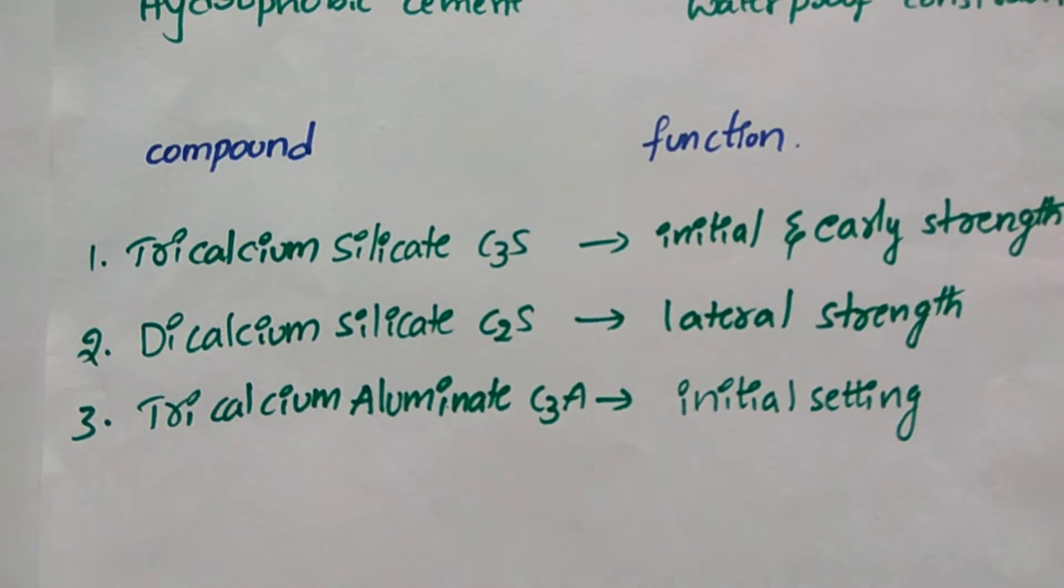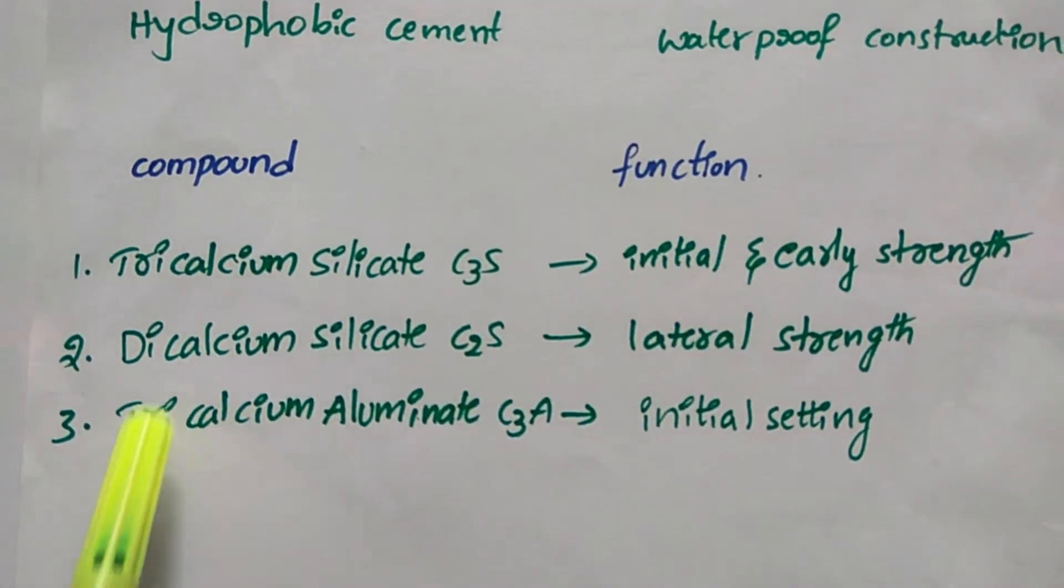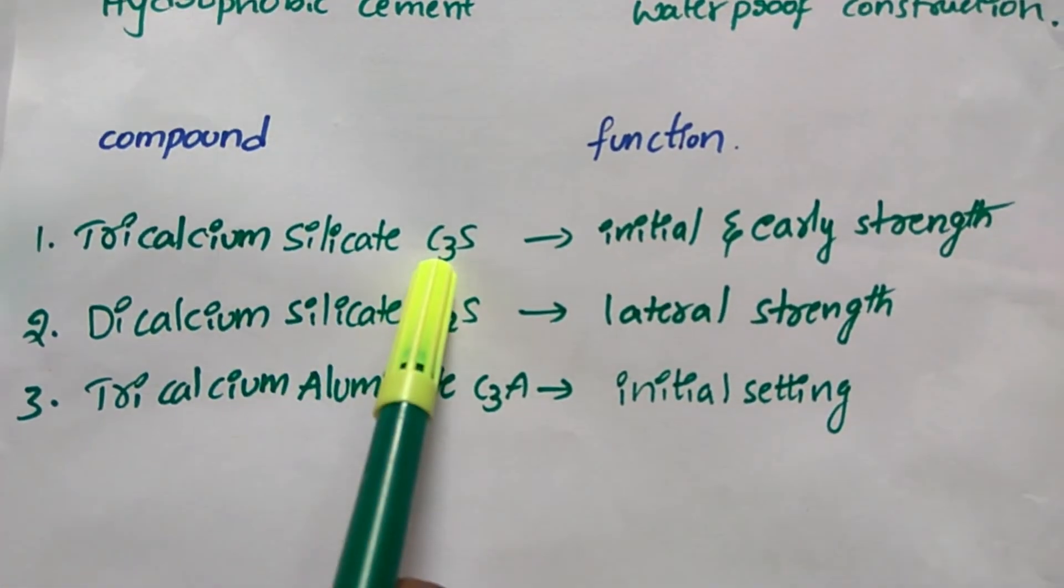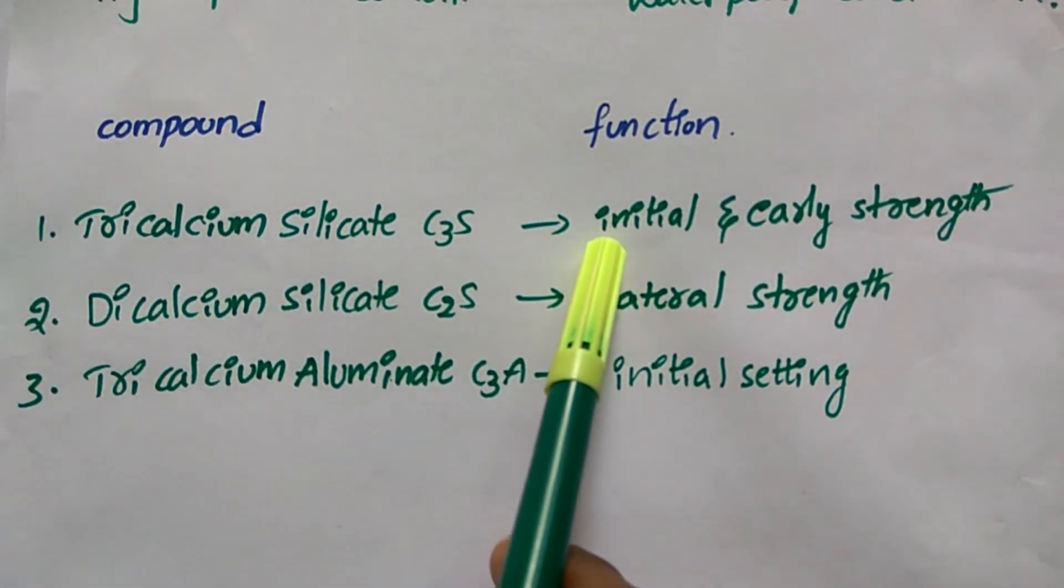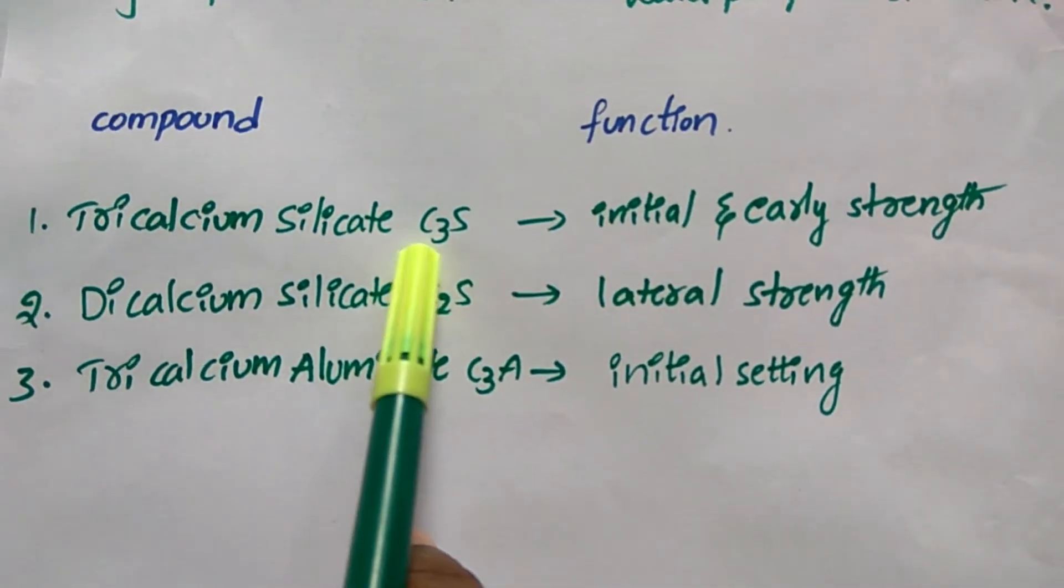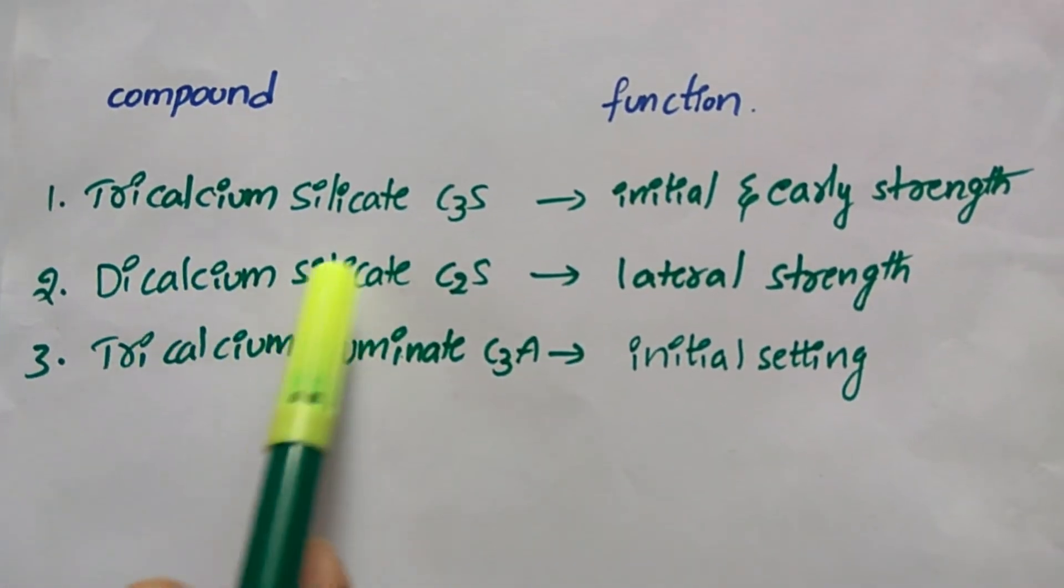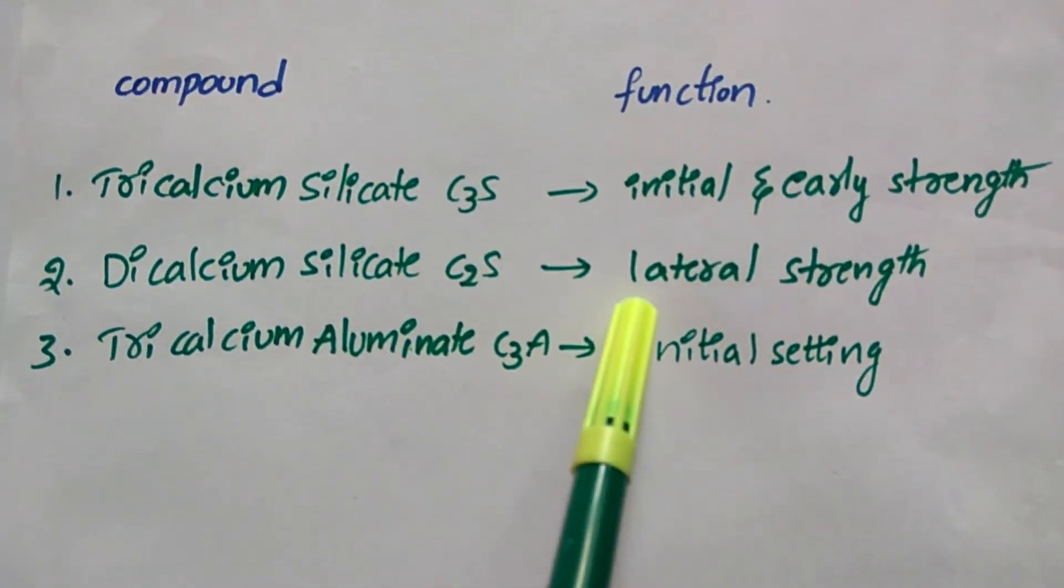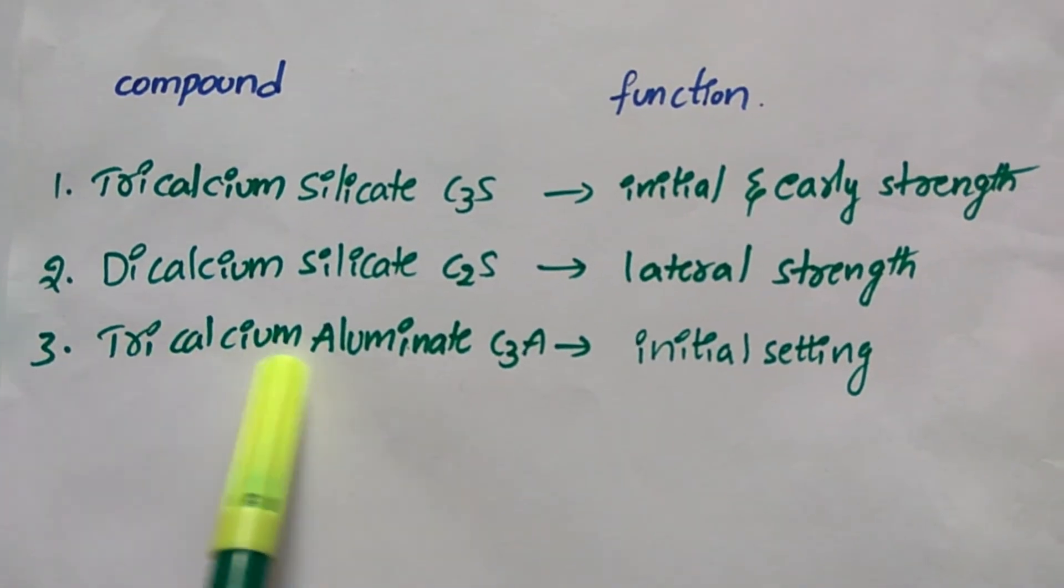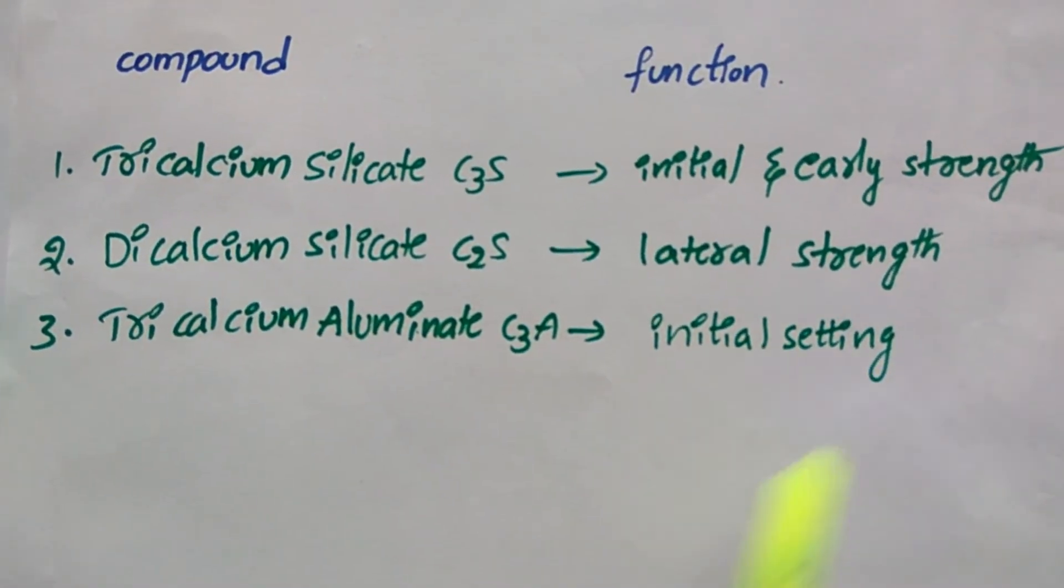Another point: Compounds and functions. Tri-calcium silicate (C3S) provides initial and early strength. Di-calcium silicate (C2S) provides later strength. Tri-calcium aluminum provides initial setting.